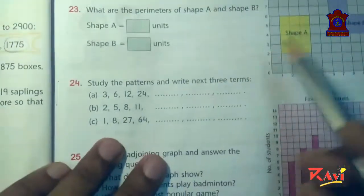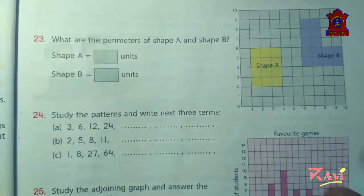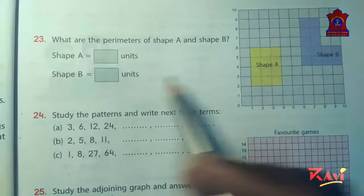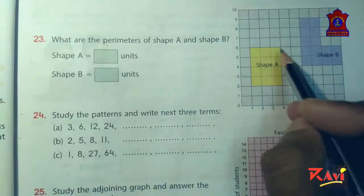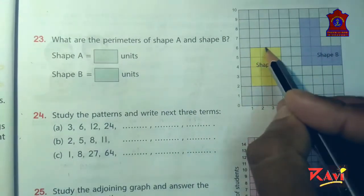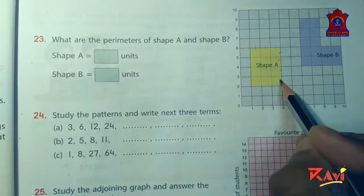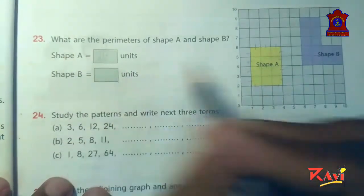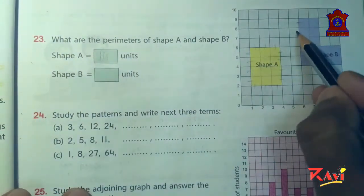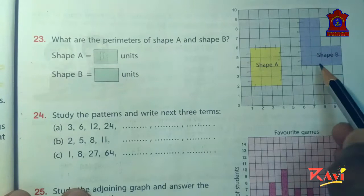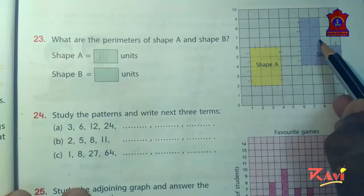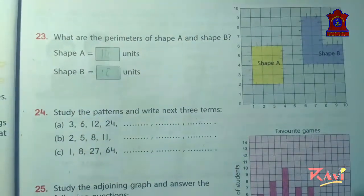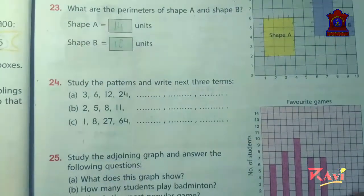Let's move to question number 23. What are the perimeters of shape A and shape B? To get the perimeter we can count number of units. 1, 2, 3, 4, 5, 6, 7, 8, 9, 10, 11, 12, 13, 14. So here it is 14 units. Shape B: 1, 2, 3, 4, 5, 6, 7, 8, 9, 10, 11, 12, 13, 14, 15, 16, 17, 18. So it is 18 units. These are very simple, that's why we are doing it quite fast.